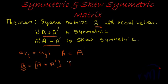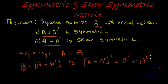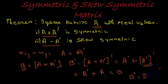Now, let us see what B transpose is. B transpose would be — if you remember the properties of transpose — A plus A transpose, whole transpose, which is equal to A transpose plus A transpose of whole transpose. Since the transpose of A transpose is equal to A, this becomes A transpose plus A, which is nothing but B. So, B transpose is equal to B, which means A plus A transpose gives a matrix B whose transpose equals the original matrix — which means A plus A transpose is symmetric.